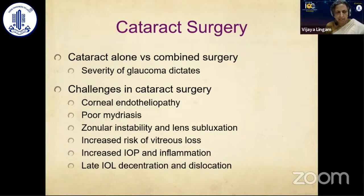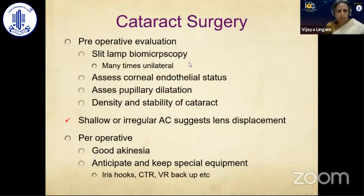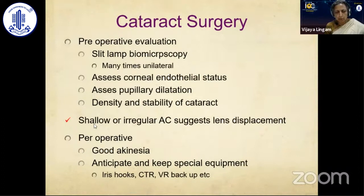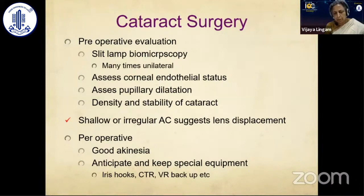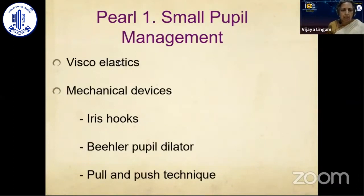Pre-operative evaluation is very important: slit-lamp microscopy to assess unilateral versus bilateral involvement, corneal endothelial status, and always assess pupillary dilation. Following dilation, examine the extent and density of exfoliation material and the stability of the zonules. A shallow or irregular anterior chamber suggests lens displacement. Pre-operatively, we need thorough planning: anticipate possible problems and keep special equipment like iris hooks for small pupils, capsular tension rings for unstable bags, and a vitreoretinal surgeon backup available.